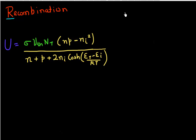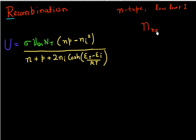I want to look at what is the dependence of recombination on the position of my trap level. I'll further assume that I have an N-type semiconductor with a low level of injection. In an N-type semiconductor, I can denote the number of electrons by N with a subscript N0, indicating the equilibrium electron density. I can also write the number of holes under equilibrium in this N-type semiconductor as P_N0, where N_N0 times P_N0 equals Ni squared.